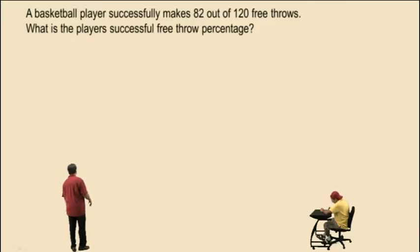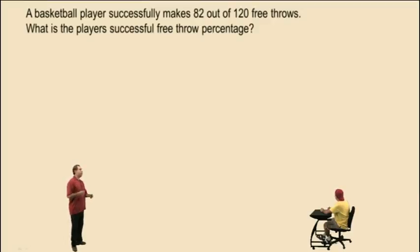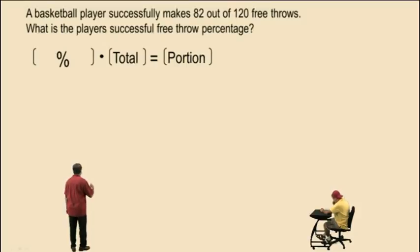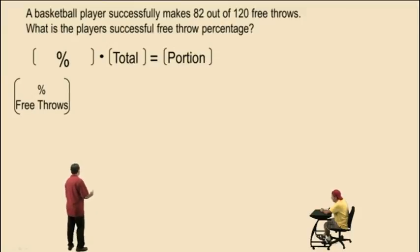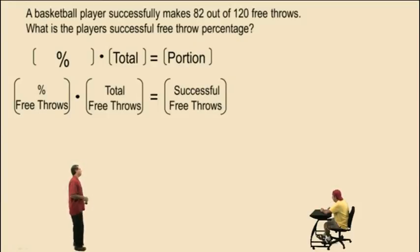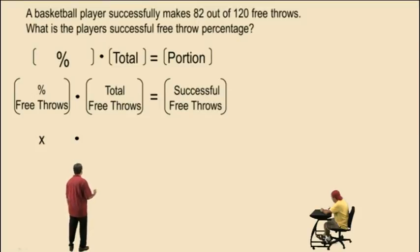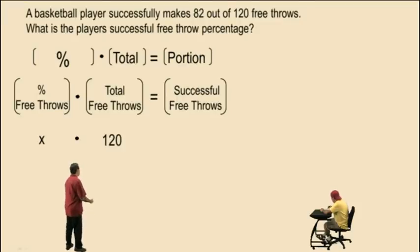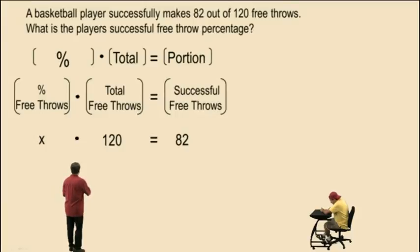A basketball player successfully makes 82 out of 120 free throws. What is the player's successful free throw percentage? So in this problem, we're trying to find the percent. Let's bring up our structure: percent times total is a portion. The percent represents the percent free throws successfully made. The total is the total free throws attempted, and the portion is the successful free throws. We're looking for the percent, so percent will be represented by the variable x. Times the total free throws, which was 120. Equals the successful free throws, which is 82. We were looking for the percentage and we were given the total and the portion.